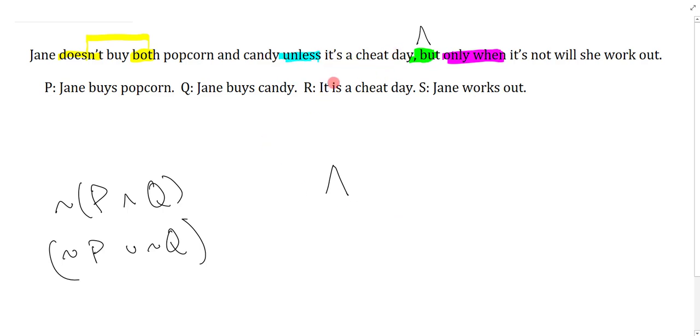But unless it's a cheat day - my preferred way of doing unless is just to use a disjunction. It's a cheat day is R. To preserve this and which is the green comma but as the main connective, I'm going to put up some brackets around this so that I don't have a non-well formed formula.